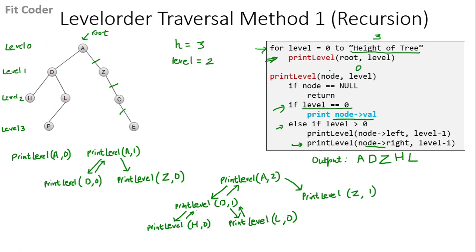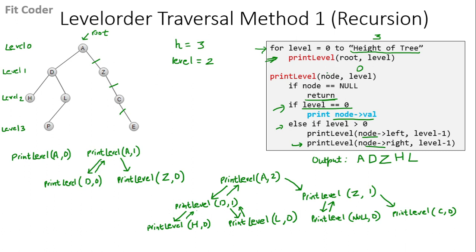Node is Z and level is 1. We come into the else part and call for left of Z which is null — when we call for null we return. Then we call for right of Z which is C at level 0. When level is 0 we print the value of node, so we print C. This function terminates and we come back to the for loop.